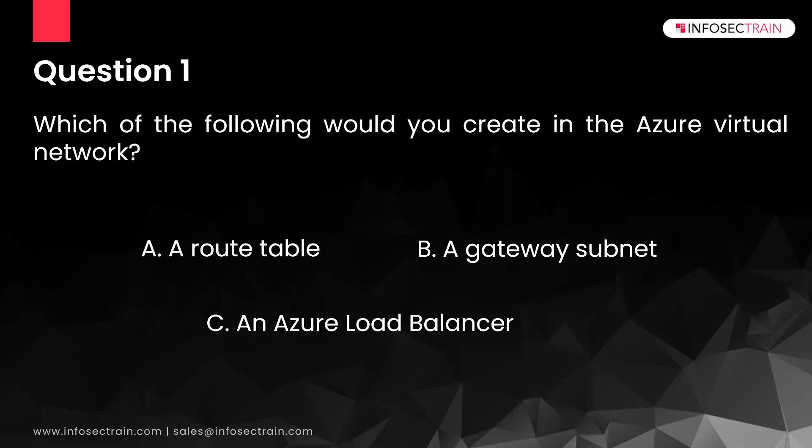Option C is also not going to be the answer. If you have practically deployed the VPN, you would easily understand the answer. The company wants to deploy a VPN, and there is already a network — an on-premise network, a VNet, and a subnet existing in the VNet. So what is the next thing you are going to create when deploying a VPN?